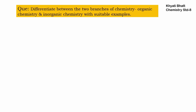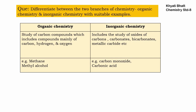Our question is to differentiate between the two branches of chemistry: organic chemistry and inorganic chemistry, and to give examples for both. Organic chemistry deals with carbon compounds which contain carbon, hydrogen, and oxygen. For example, methane (CH4) and methyl alcohol — these compounds contain carbon, hydrogen, and oxygen and belong to organic chemistry.